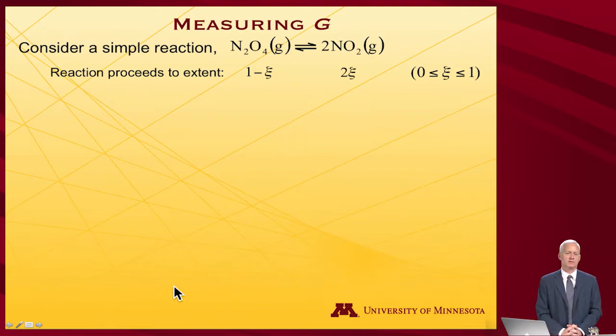So again, let's do an example because it's helpful. Now I will do a NOx example, nitrogen oxides. It's a simple reaction: N2O4 dissociating into two nitric oxide molecules, 2NO2. And the reaction is going to proceed to some extent, ξ, where ξ is going to be able to range from 0 to 1, because at 1 I run out of this.